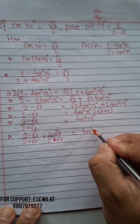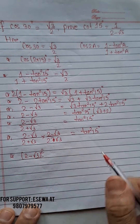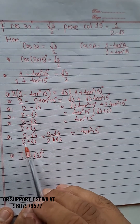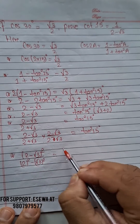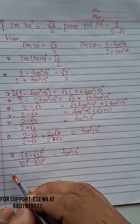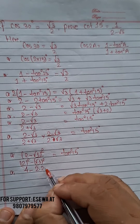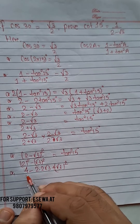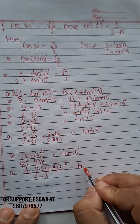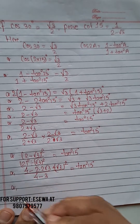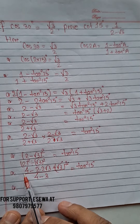After multiplying, the numerator becomes (2 - √3)² and the denominator is (2 + √3)(2 - √3), which is a² - b² = 2² - (√3)² = 4 - 3 = 1. Expanding the numerator: 4 - 4√3 + 3 = 7 - 4√3, all over 1, equal to tan²15°.